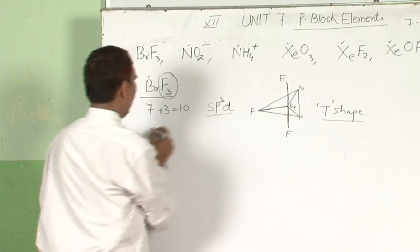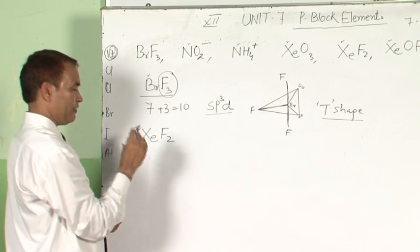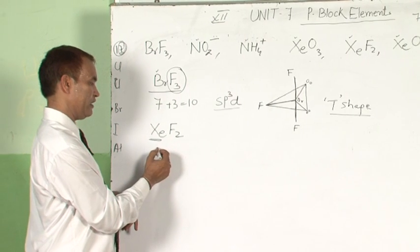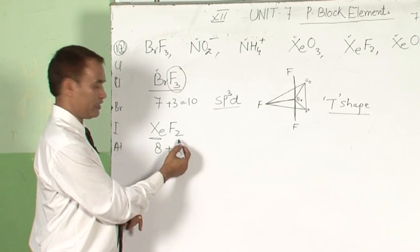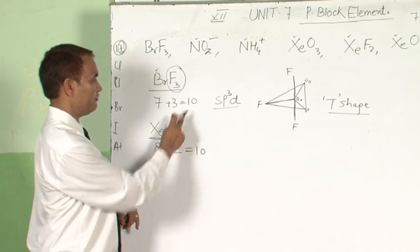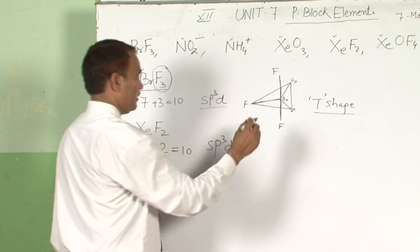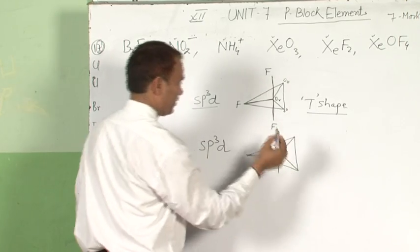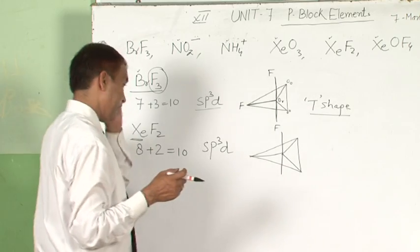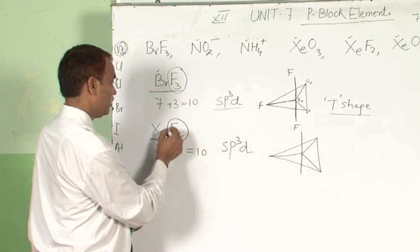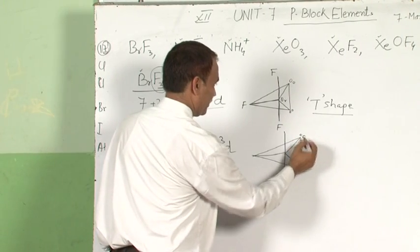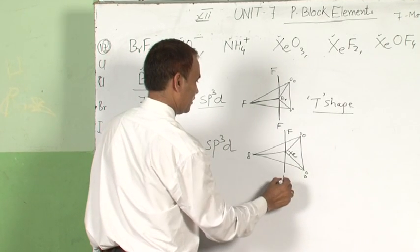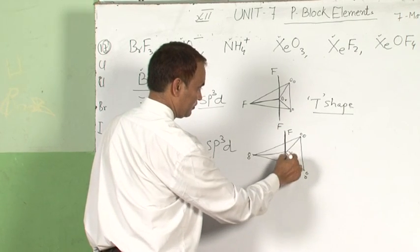Similarly, in case of XeF2: the central atom is xenon, which belongs to Group 18. 18 means 8 outermost electrons, plus number of bonding atoms is 2 — so 8 plus 2 equals 10. Again we get 10, meaning SP3D hybridization and regular geometry trigonal bipyramidal. But the bonding atoms are only 2, meaning there are 3 lone pairs. With 3 lone pairs in trigonal bipyramidal, the shape becomes linear. So XeF2 is SP3D hybridized with a linear shape.